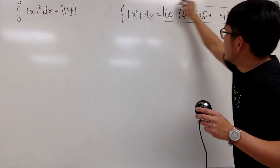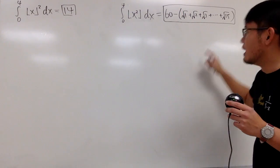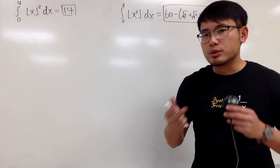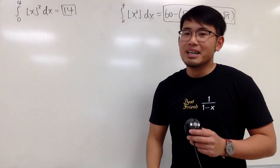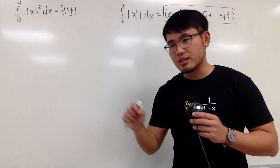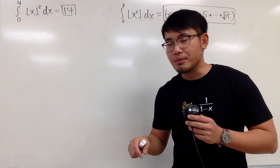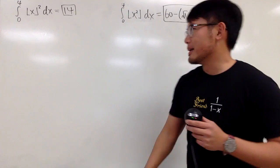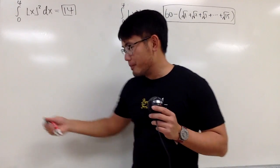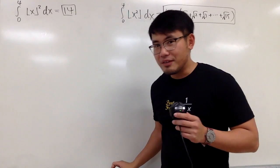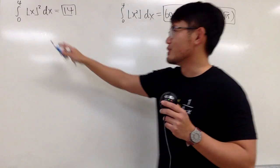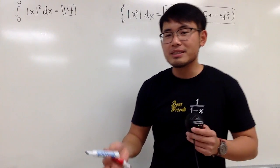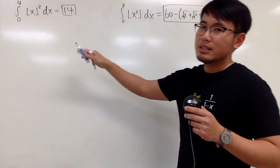A lot of you guys are about to ask, do we have a general formula for this? Namely, square root of 1 plus square root of 2 plus up to square root of n? Well, the formula is not so easy. You guys can check the link in the description, because in this video I just want to do integrals. Also, you guys should definitely check out Brilliant.org if you want to see the definition of the floor of x or the fractional part of x, and I also have other videos for similar integrals.